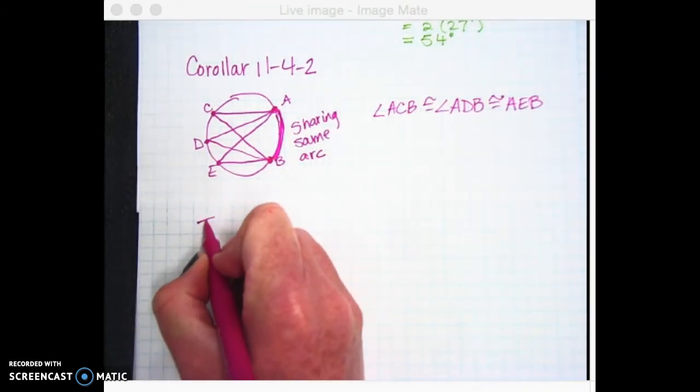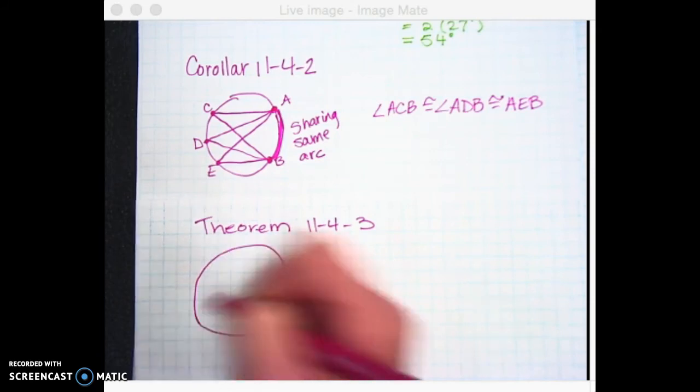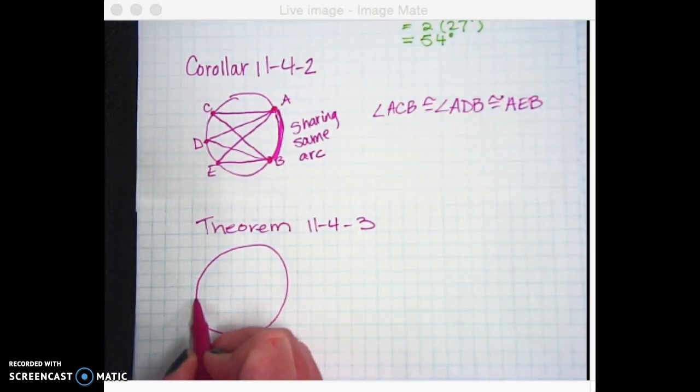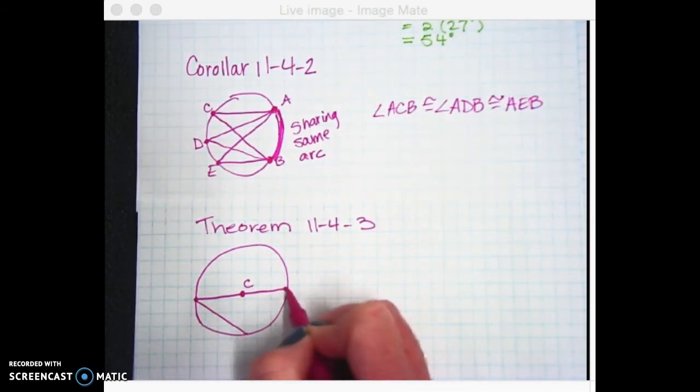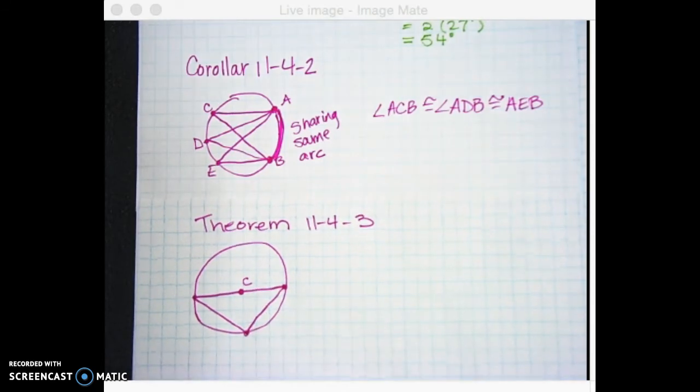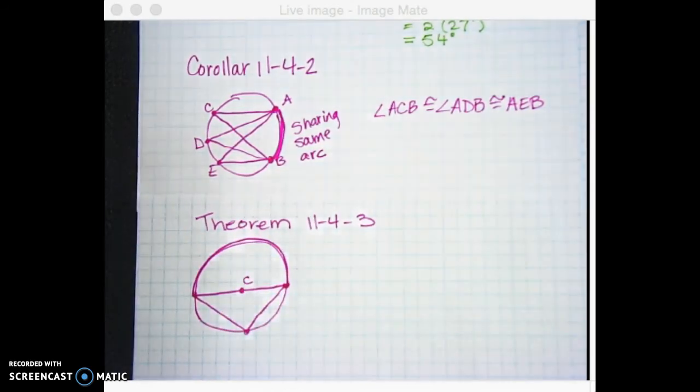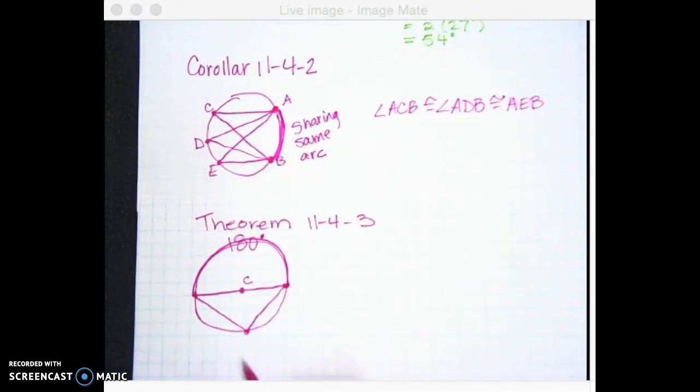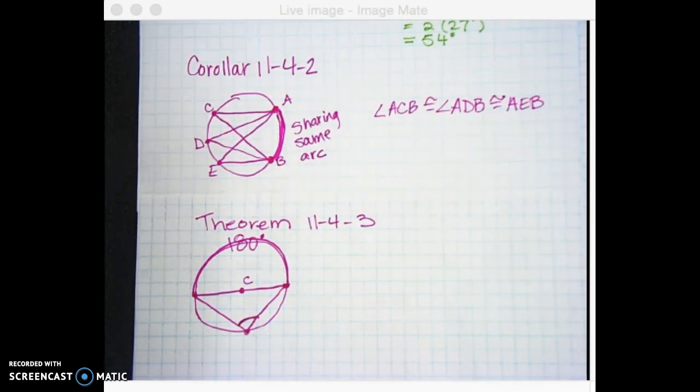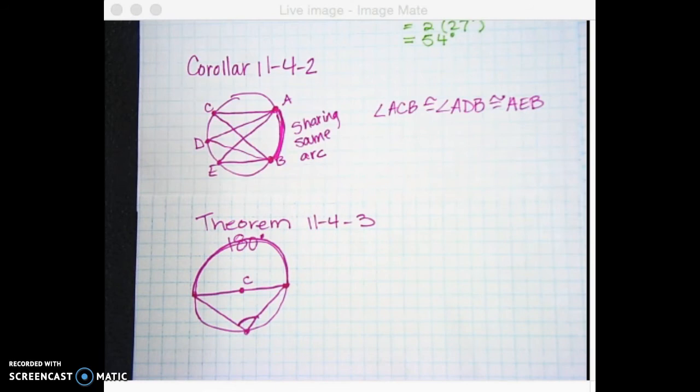Which leads us to another theorem. There's another theorem called 11-4-3, and again, it starts with a circle, and it says this, that if you have this diameter, so diameter has to go through the center, we'll call that C, that if it creates an inscribed angle, that from here to here, on this arc, is how many degrees? It's half a circle. It's a semicircle. So does anybody know how many degrees that would be? 180.